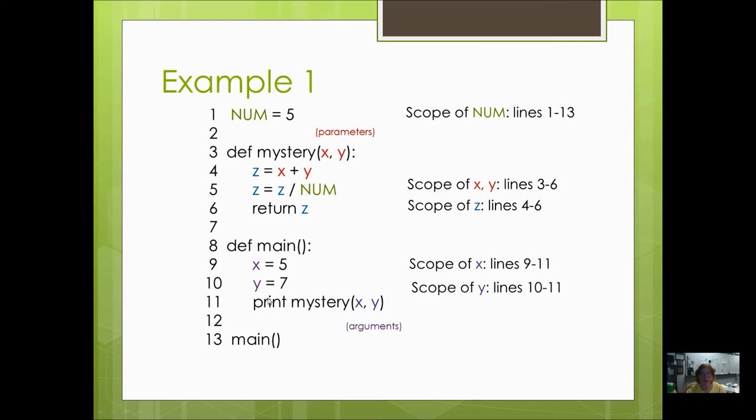Here's another function, and x is a local variable to this function, and this particular x has a scope of 9 through 11, lines 9 through 11, and y 10 through 11. And then I've used them as arguments, so I've passed their values into here. But these x and y's are different from these x and y's. They have different scope.